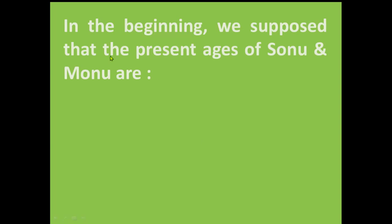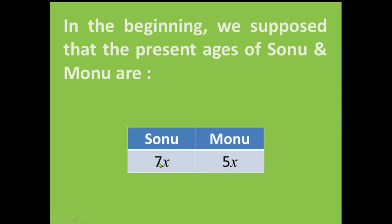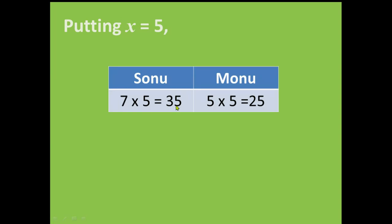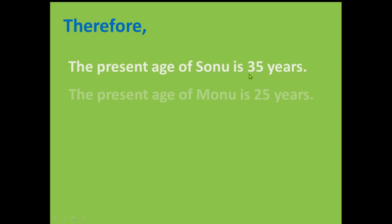In the beginning, we supposed that the present ages of Sonu and Monu are 7X and 5X. And now we have found out the value of X. So let us put X is equal to 5. We get 35 years as the age of Sonu and 25 years as the age of Monu. Therefore, the present age of Sonu is 35 years. The present age of Monu is 25 years.